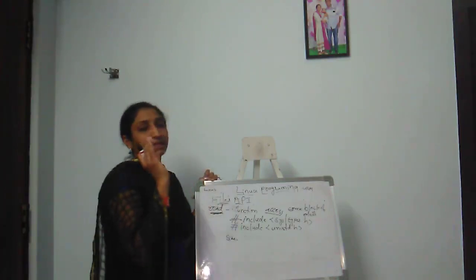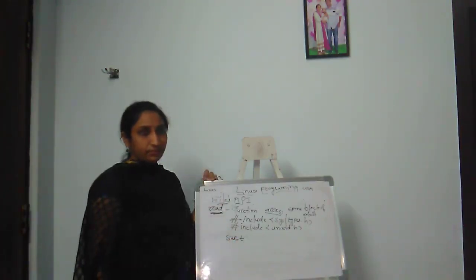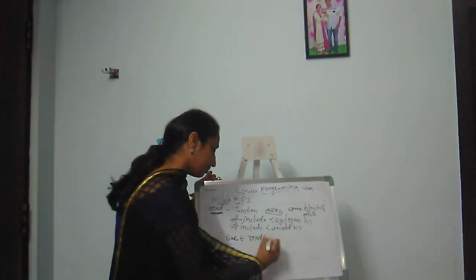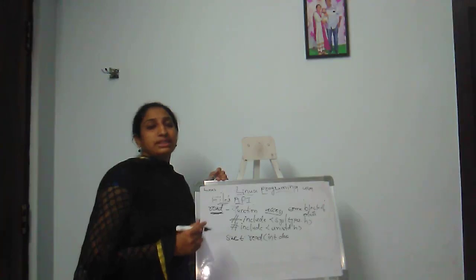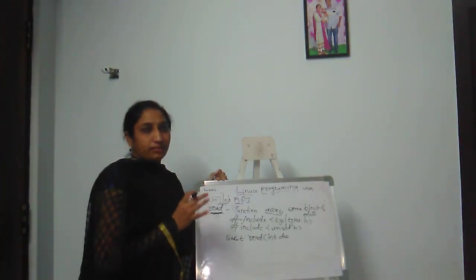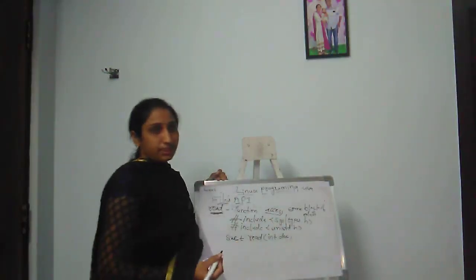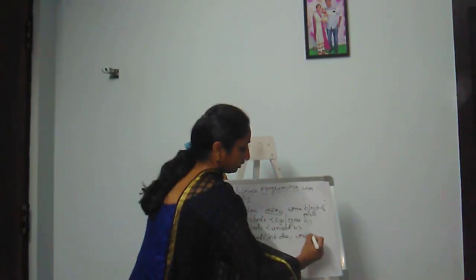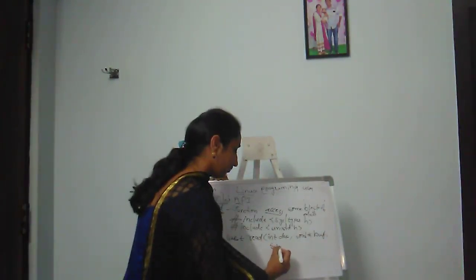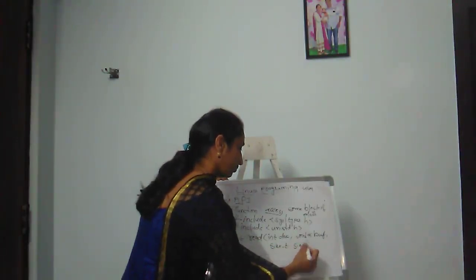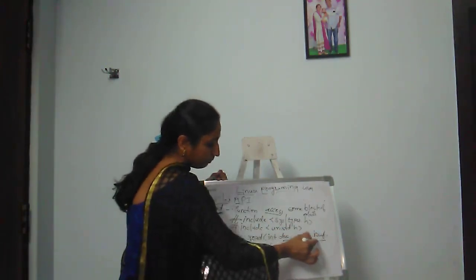Since we are fetching only a fixed size of data, we use size_t. The read system call syntax is: ssize_t read(int fd, void *buff, size_t size). It takes three parameters: file descriptor, buffer, and size.